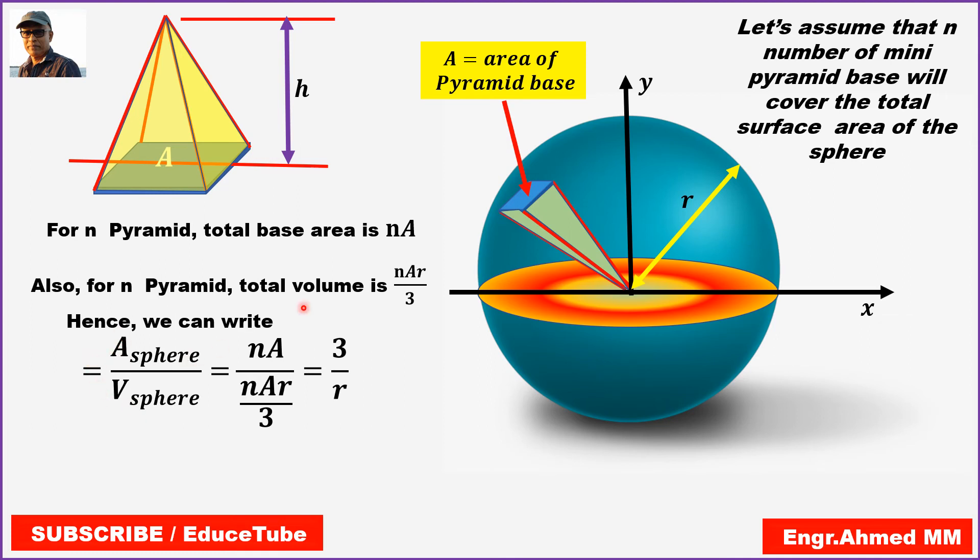So area of the sphere, it is nA. Volume of the sphere, it will be nAr by 3. So cancelling n and A, we get 3 by r.